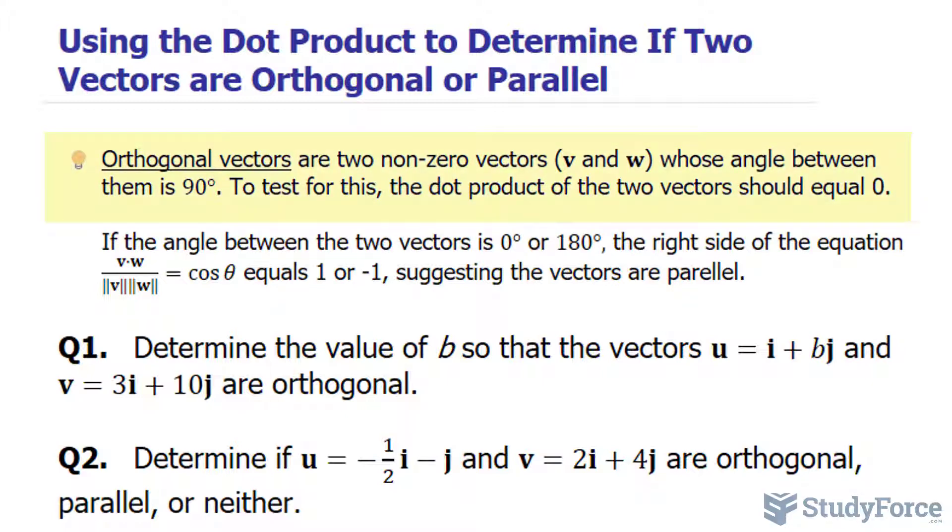Orthogonal vectors are two non-zero vectors, let's say V and W, whose angle between them is 90 degrees. To test for this, the dot product of the two vectors should equal zero.